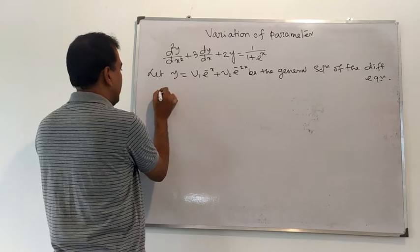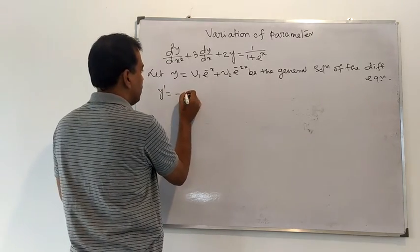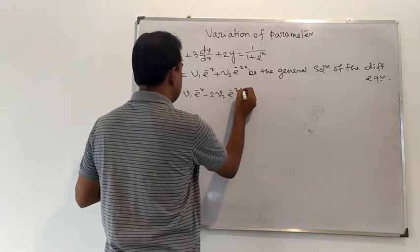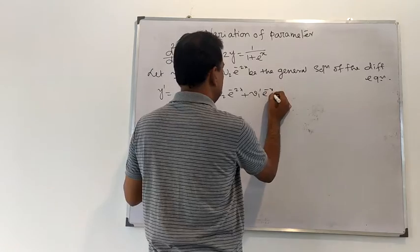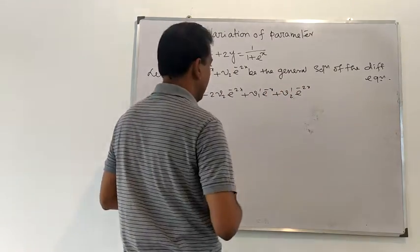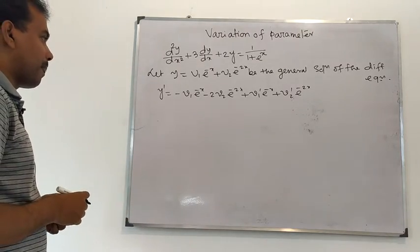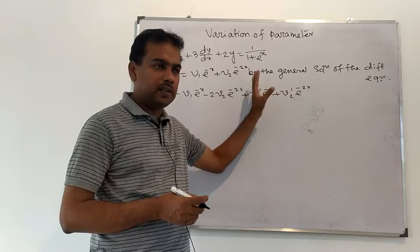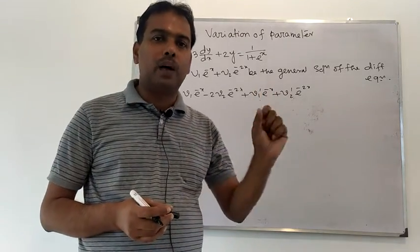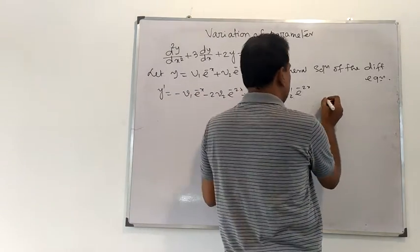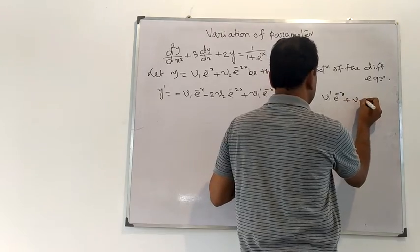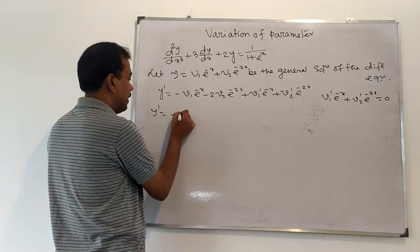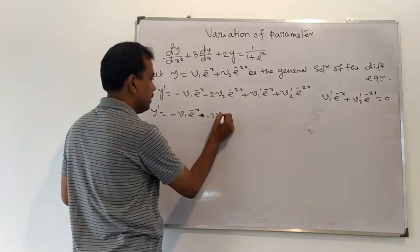Now differentiating y with respect to x: y' = −v1·e^(−x) − 2v2·e^(−2x) + v1'·e^(−x) + v2'·e^(−2x), where the prime denotes derivative with respect to x. We choose v1 and v2 such that the part containing the derivatives of v1 and v2 equals zero, i.e., v1'·e^(−x) + v2'·e^(−2x) = 0. So y' = −v1·e^(−x) − 2v2·e^(−2x).